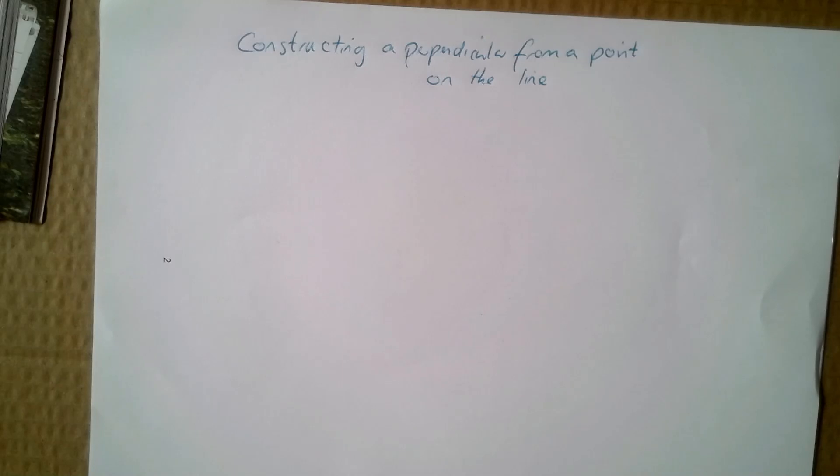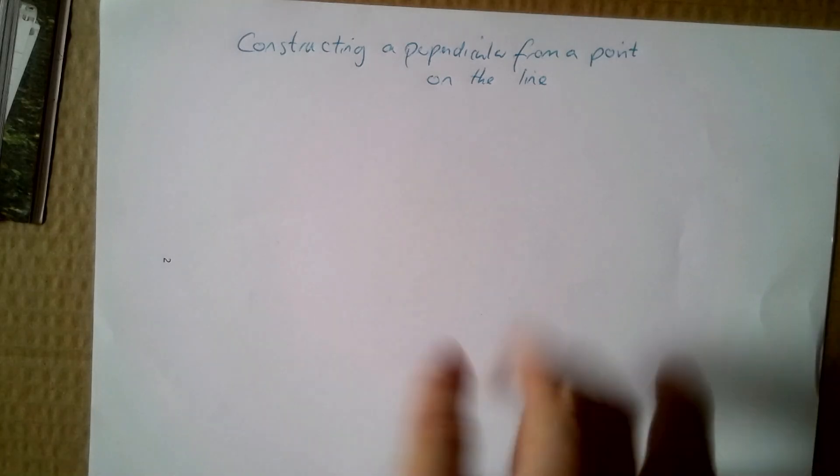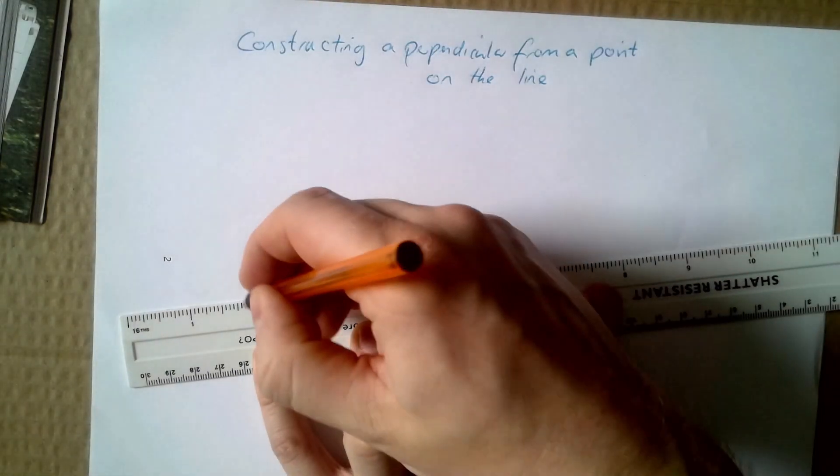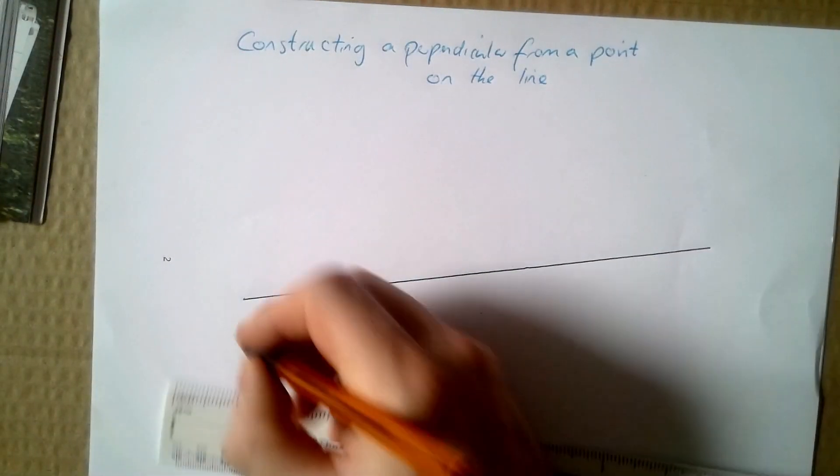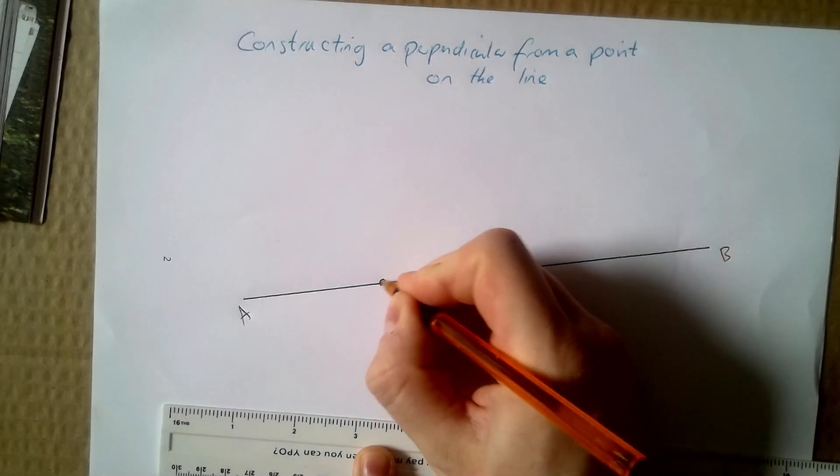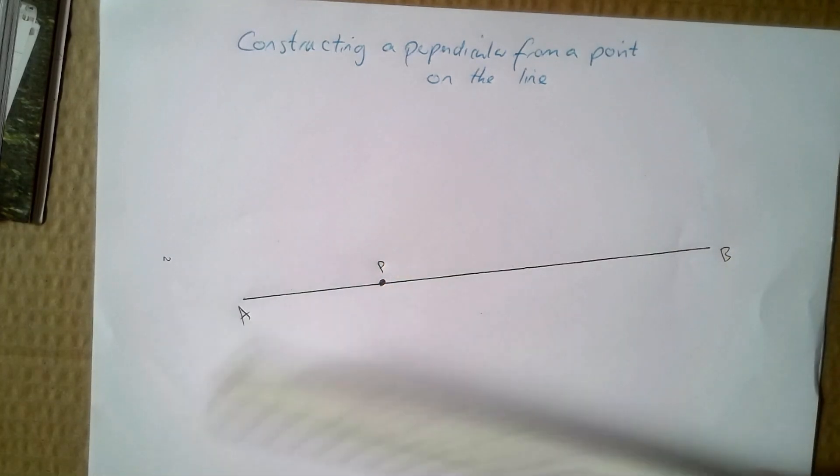The next example you'll recognize is very similar but has a point that is on the line. So here's my line AB, here's my point P. Okay and now I'm going to do the same thing.